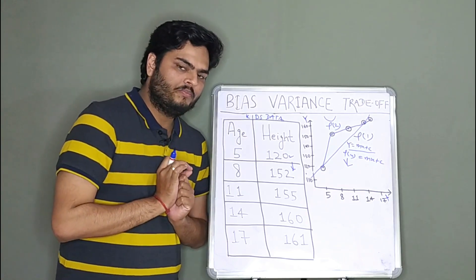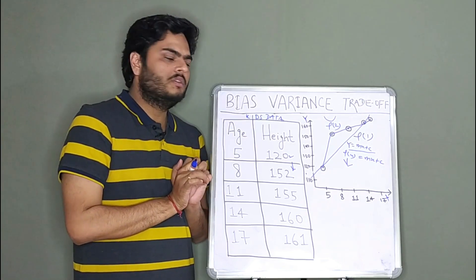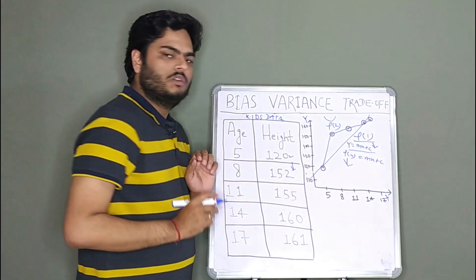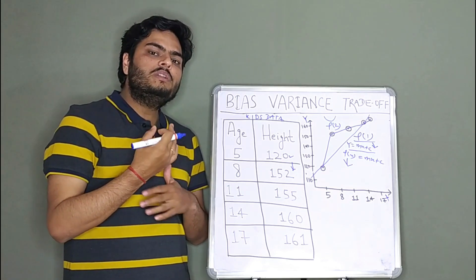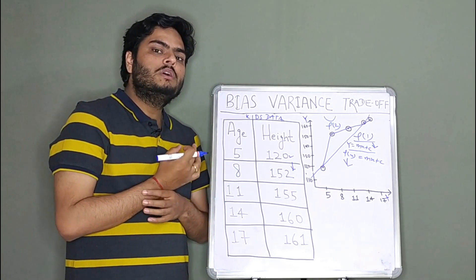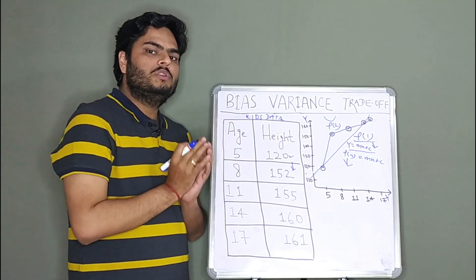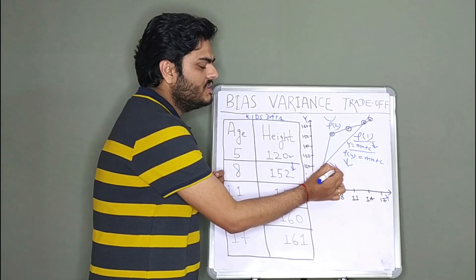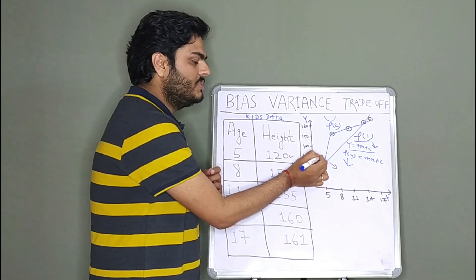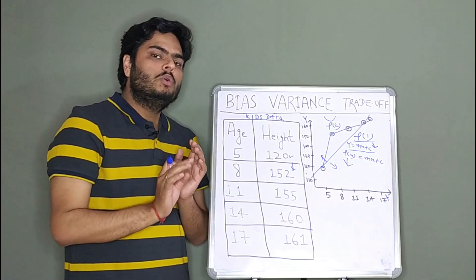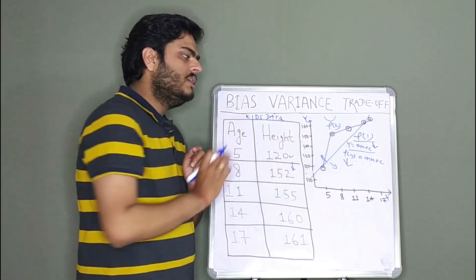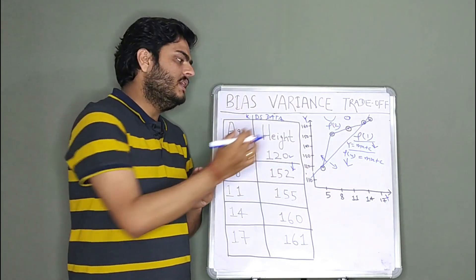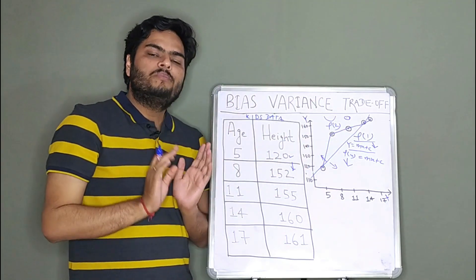Whenever your function is too much following the training data, your model is said to be a high variance model. f1 is a generalized function — a high bias model will be a generalized model. If new data comes, this line will only shift a little bit. But what happens to a high variance model? If a new data point is added, the entire function will change. That is the issue with high variance models.